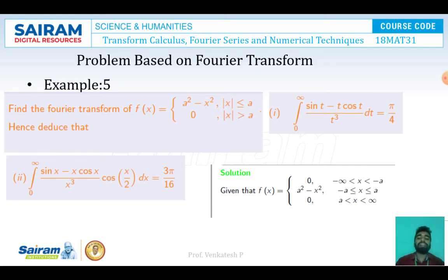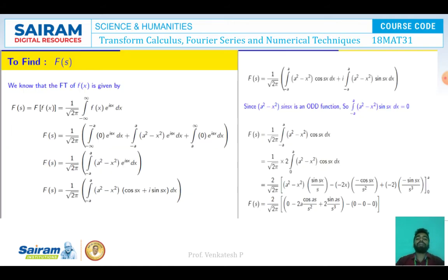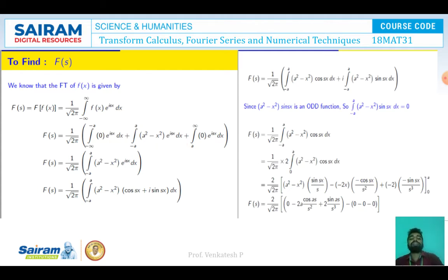First we expand the given function f(x): it equals 0 for -∞ < x < -a, equals a² - x² for -a ≤ x ≤ a, and equals 0 for a < x < ∞. Now take the Fourier transform, given by F(s) = (1/√(2π)) ∫_{-∞}^{+∞} f(x) e^{isx} dx. The first and third integrals vanish since f(x) = 0 there, leaving F(s) = (1/√(2π)) ∫_{-a}^{+a} (a² - x²) e^{isx} dx.